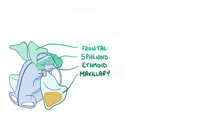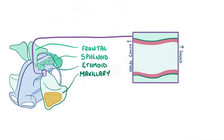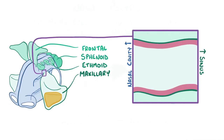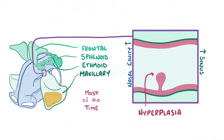Nasal polyps develop when epithelial cells that line the respiratory region simply overgrow, a process called hyperplasia. Most of the time, one or more nasal polyps form in the maxillary or ethmoid sinus.